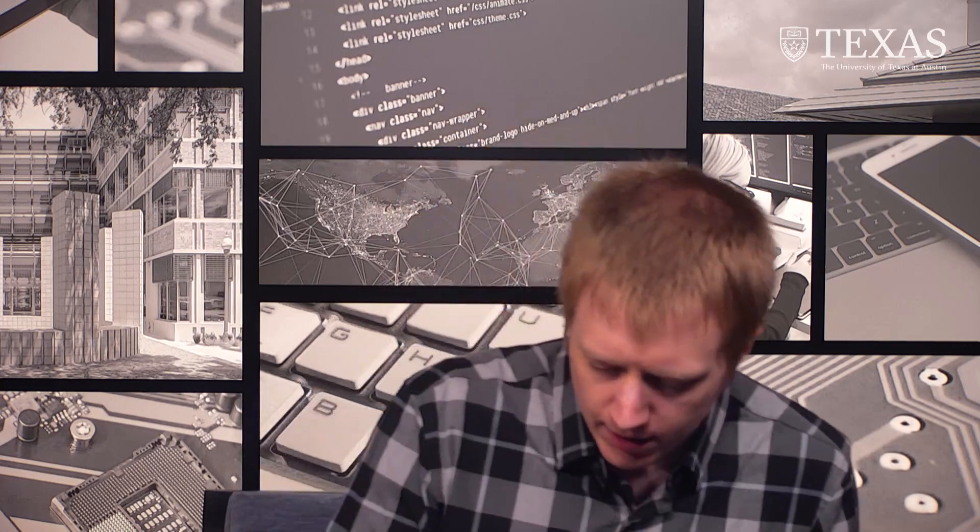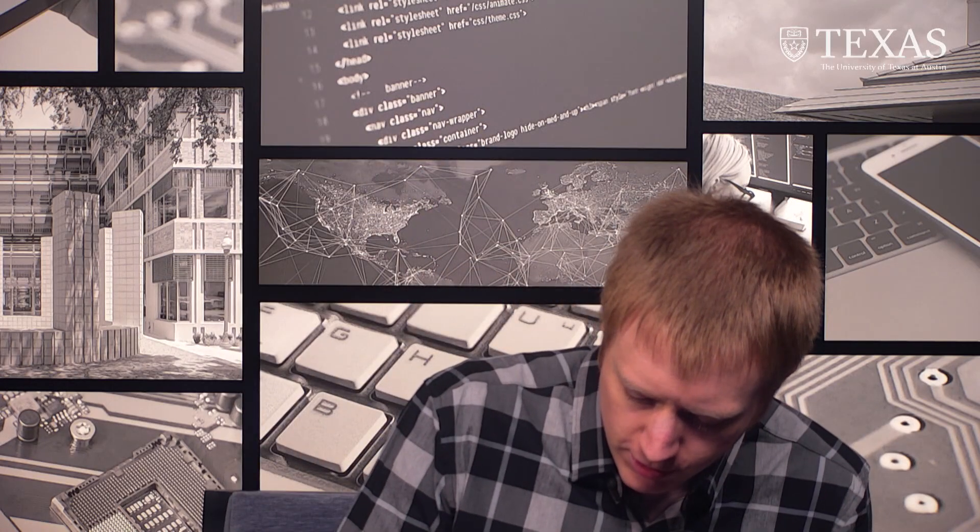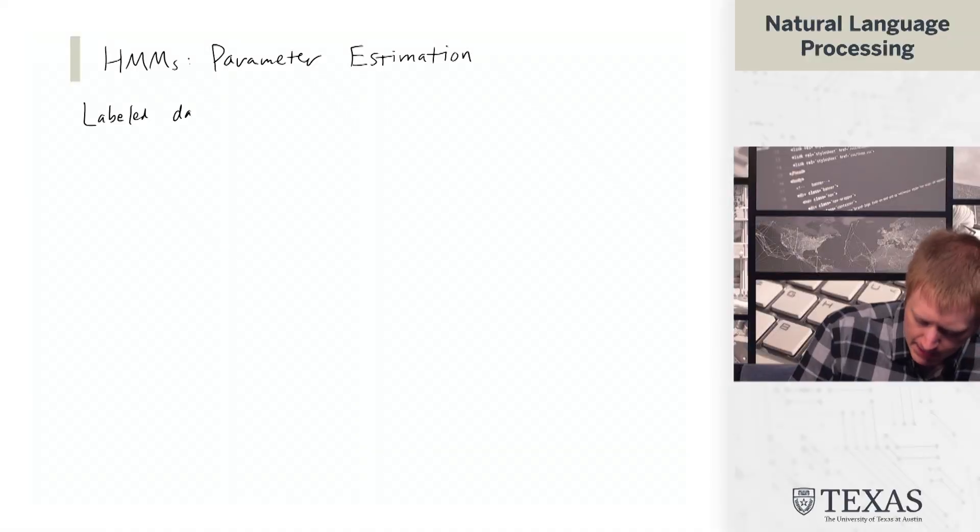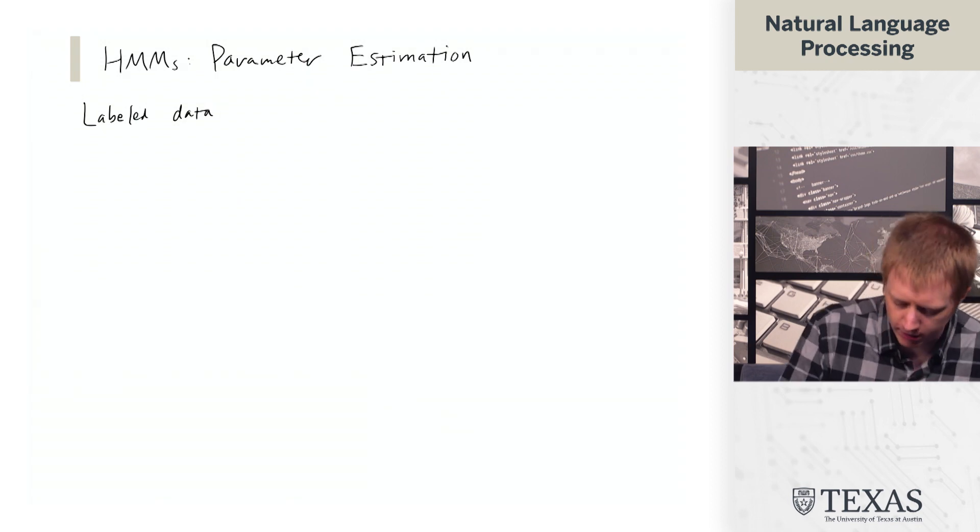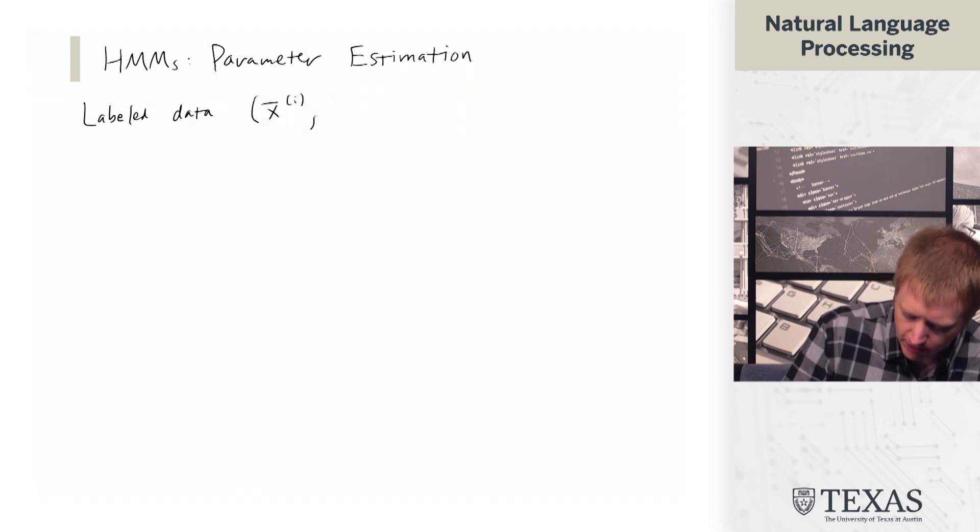In this segment, we're going to talk about how to do parameter estimation in hidden Markov models. So we're going to assume that we have some labeled data for our tagging task.